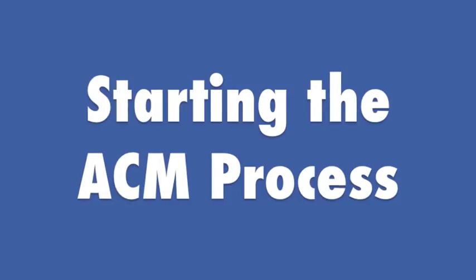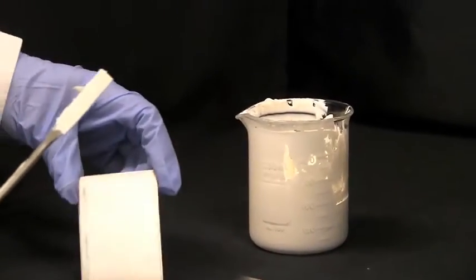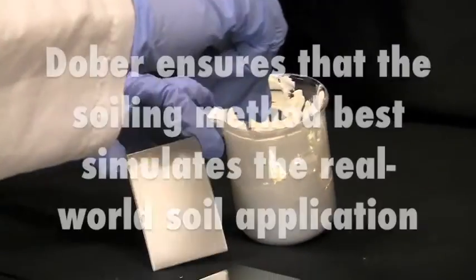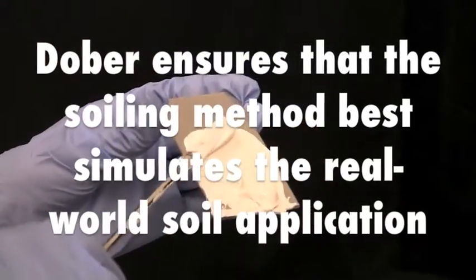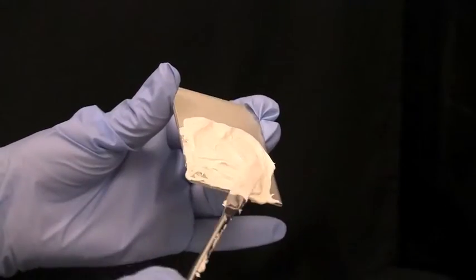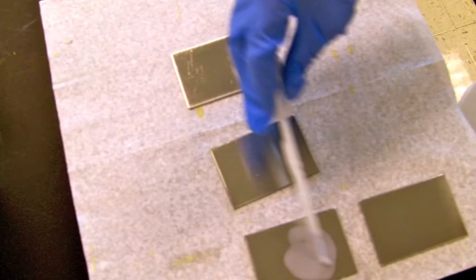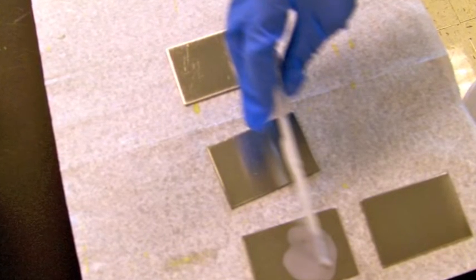The first step in the ACM process is the selection of the coupons and the soiling method that best simulates the real-world soil application. At Dober, we have multiple methods of applying and hardening residues to ensure that we have good, representative conditions for the cleaning process.